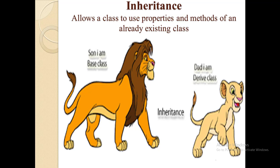Inheritance is a mechanism in which one class acquires the property of another class — for example, a child inherits the traits of his or her parents. In the given example, from the movie The Lion King, Mufasa is the father and Simba is his son. Simba inherits all the traits and qualities of his father Mufasa. So in inheritance terms, Mufasa is the base class while Simba is the derived class. We can reuse the fields and methods of the existing class — hence inheritance facilitates reusability.